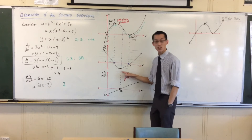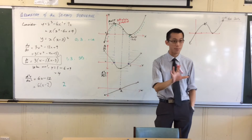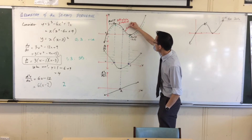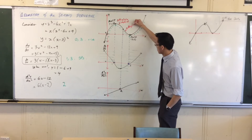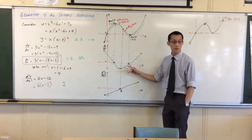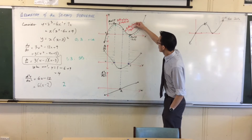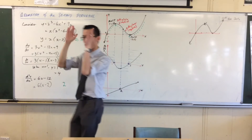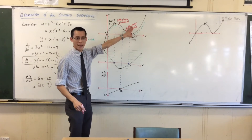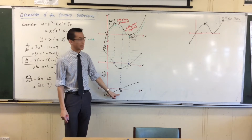It corresponds to this: dropping and dropping and dropping, getting to the lowest point. It gets to the lowest point and then it stops — and then instead of getting faster, it's getting slower, which corresponds to this first derivative getting to zero. It's still negative.